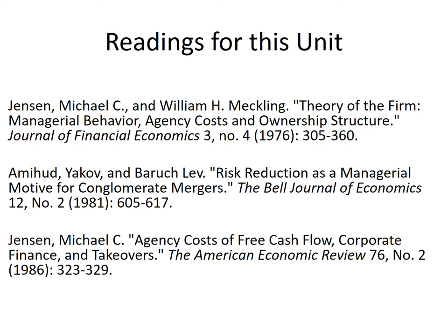The next paper is Amihud and Lev from 1981. They take the agency thought one step further, talking about how managers have undiversified human capital invested with the firm, and the only way they can reduce the risk of that investment is to reduce the risk of the firm. One way to reduce the risk of the firm is through conglomerate merger — where we take dissimilar businesses and put them together. Just like holding dissimilar stocks in the same portfolio eliminates some risk, conglomerate mergers do the same. However, Amihud and Lev argue that this may or may not be in the best interest of the shareholders.